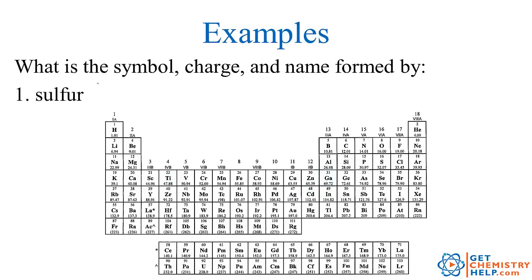Let's go through some examples. What would the symbol, charge, and name be for sulfur when it becomes an ion? Sulfur is S. Sulfur has 16 electrons and is two away from argon, so it wants to gain two to get 18 — making it sulfur 2 negative. Since it's a nonmetal, we just change the ending to "-ide." So sulfur becomes the sulfide ion.